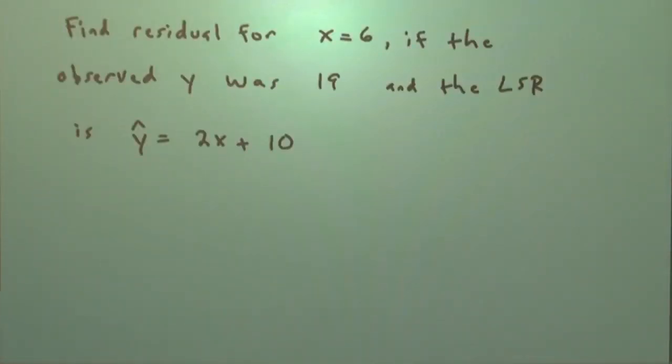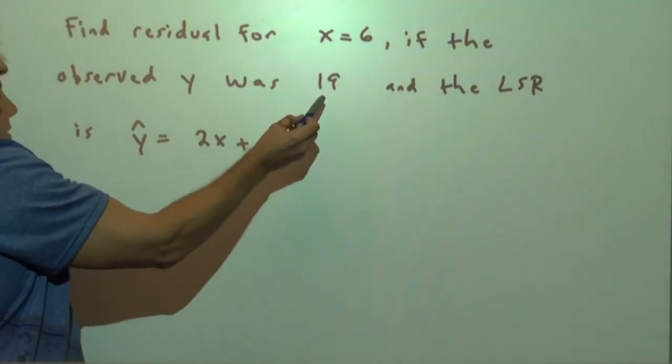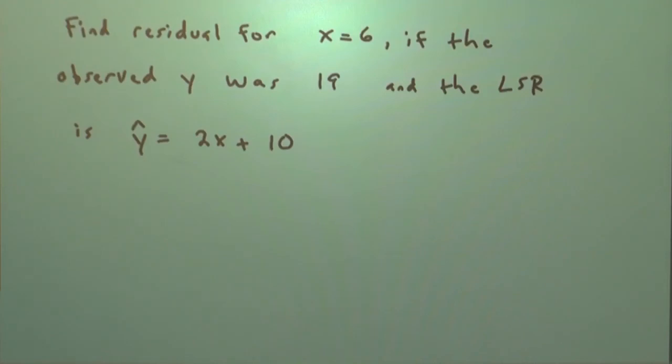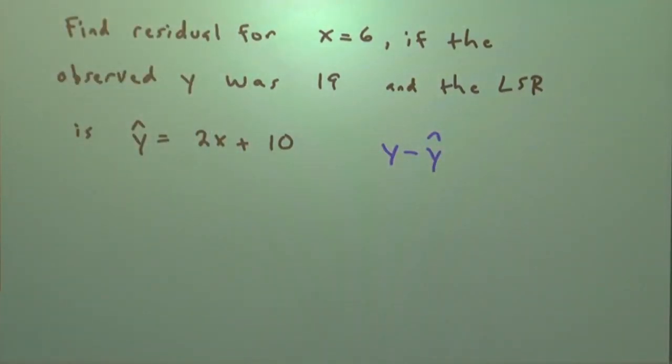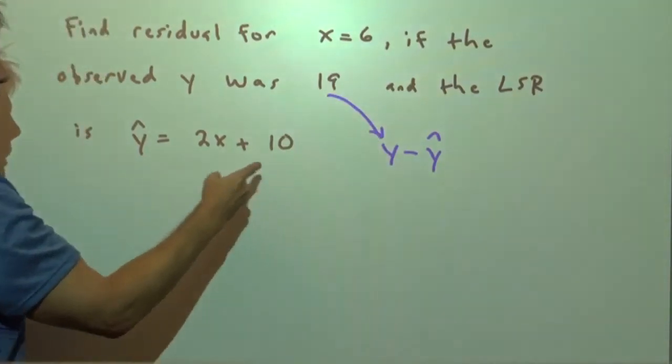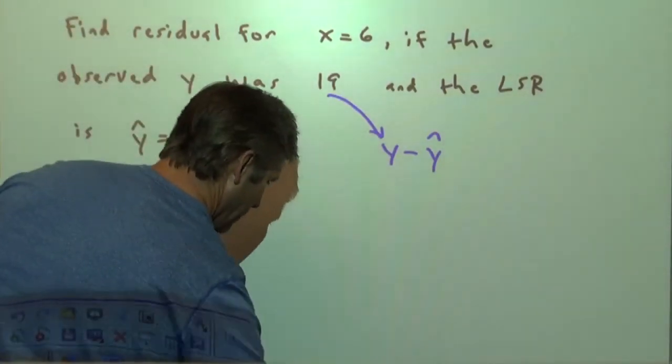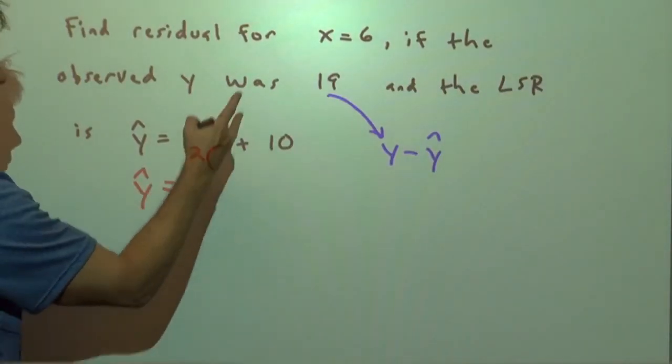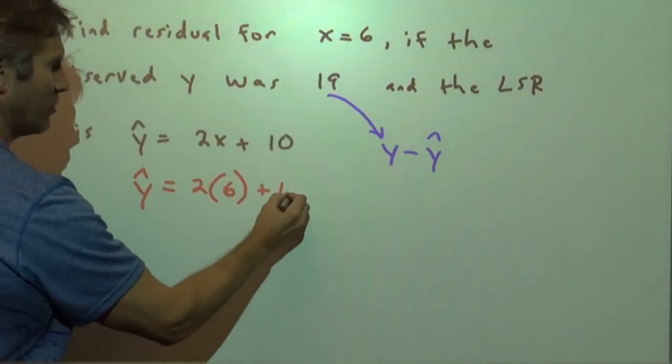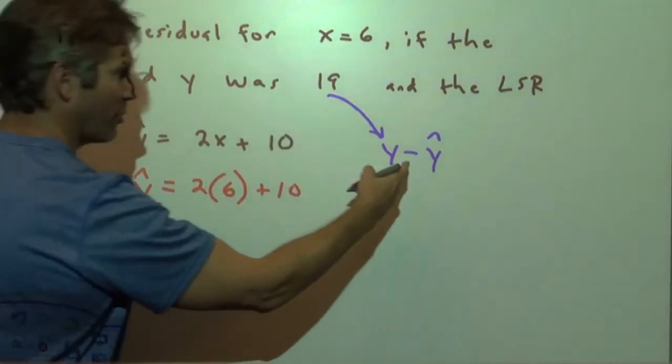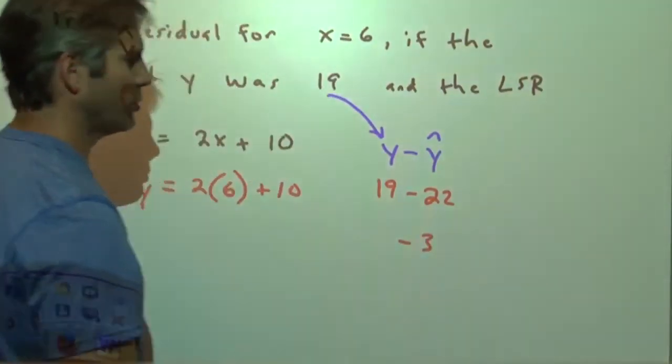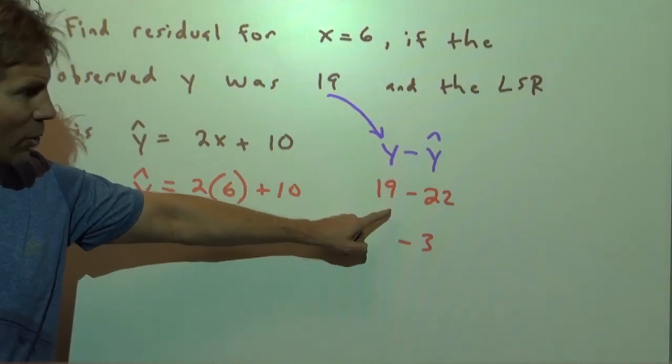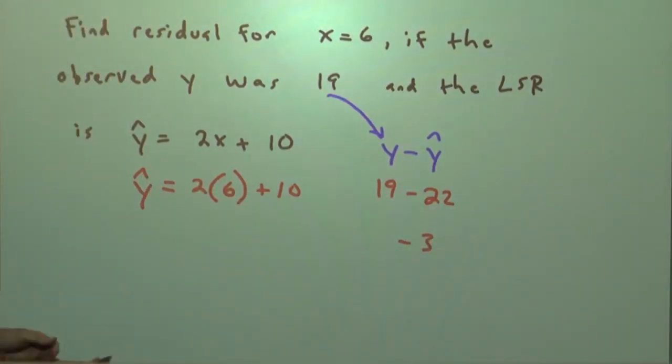One last problem, and it's right here. Find the residual when x is 6, and when it's 6, y is 19, the observed y, knowing that this is our least-squares regression line. Well, remember, a residual is y minus y-hat. So we need the observed y. That's this guy. That's the 19. We need the predicted y that we can get from this equation. So we plug in the 6. We were told when x was 6, we got 19 for y. So this comes out to be 22. So our predicted y was 22. Our observed y was 19. 19 minus 22 is negative 3. The residual is negative 3, meaning our observed y was 3 units below what we would have predicted with our least-squares regression line. So there's an intro to residual analysis, and it becomes fairly important the further we get into the course.